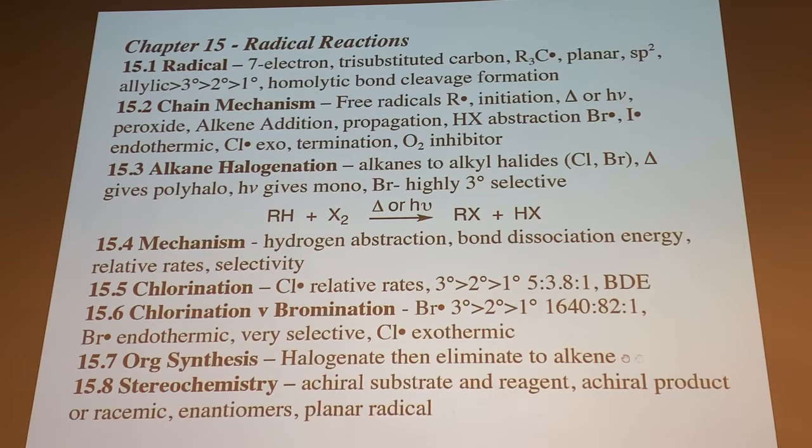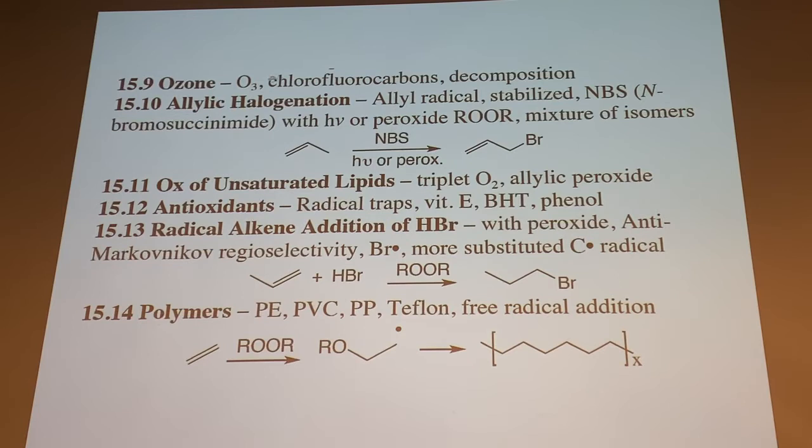Because of stereochemistry — the radical is a flat trigonal planar structure — it loses a stereocenter at that point if there is one. Generally we'll get achiral or racemic products because of the planar radical geometry.